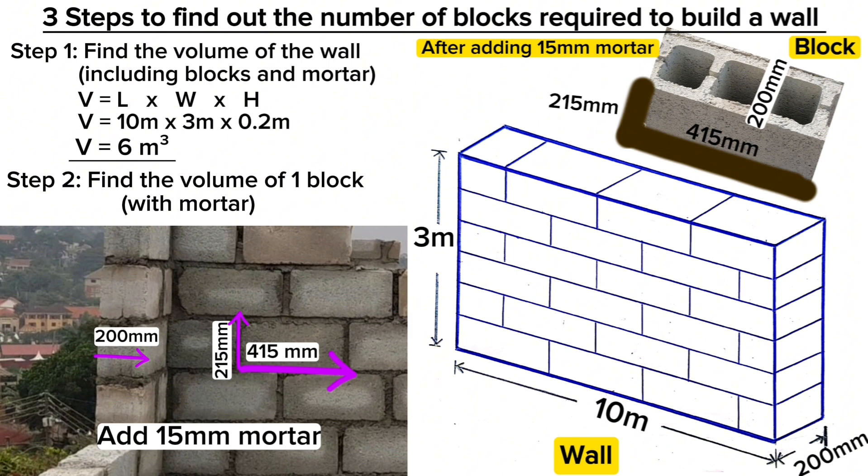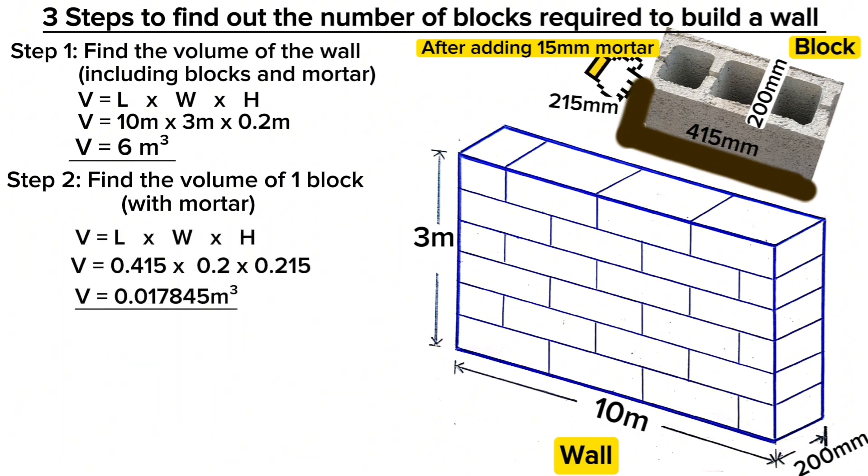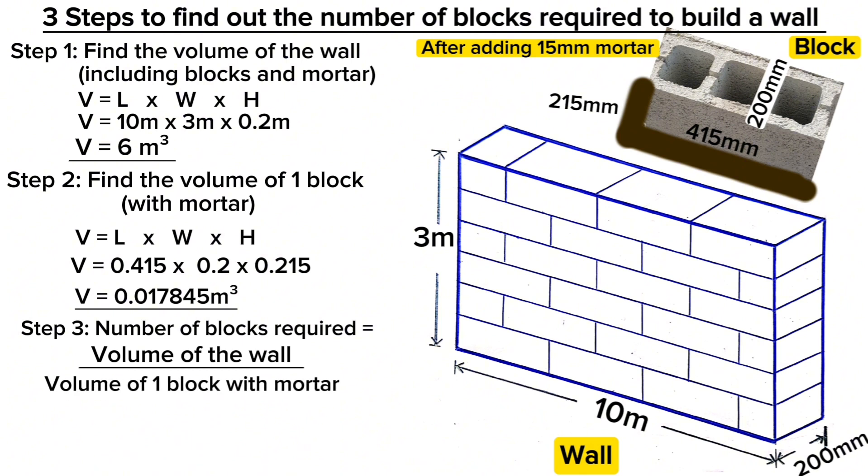Therefore, the volume of this block with mortar is V = 0.415 × 0.2 × 0.215 = 0.017845 m³. Step three: the number of blocks required is equal to volume of the wall divided by volume of one block with mortar. When we feed in our figures, we get 6 ÷ 0.017845 = 336.229, which is equivalent to 337 blocks.